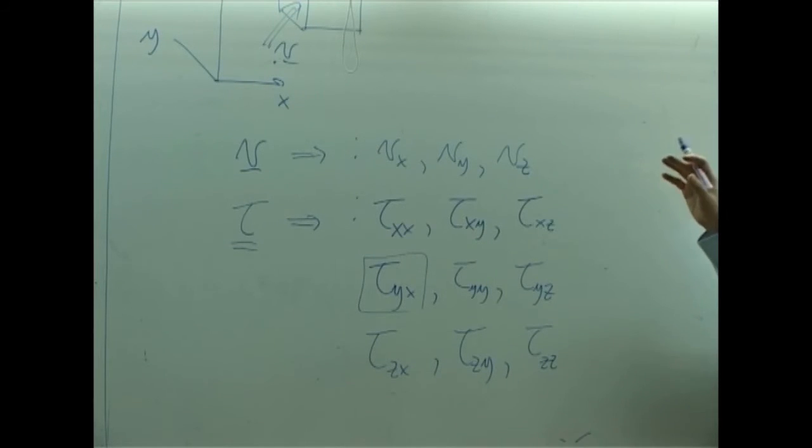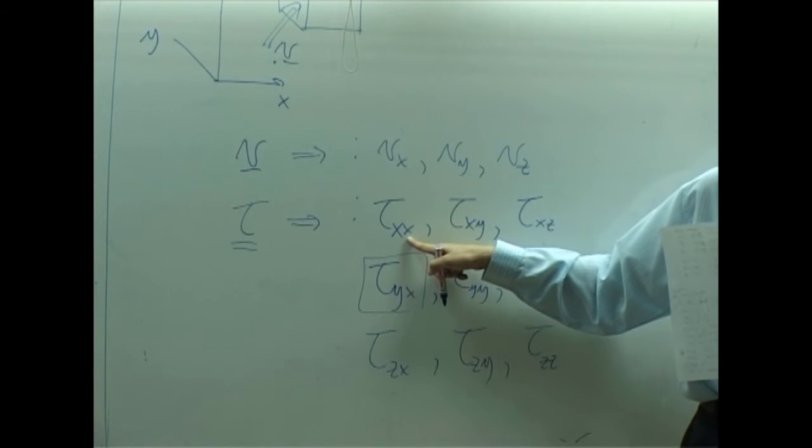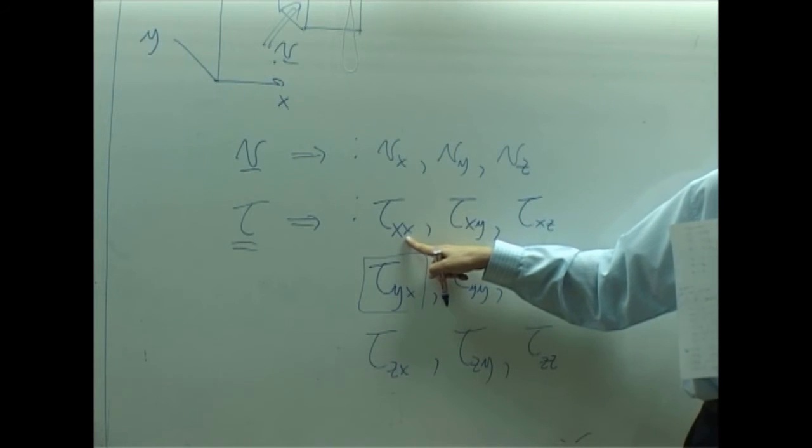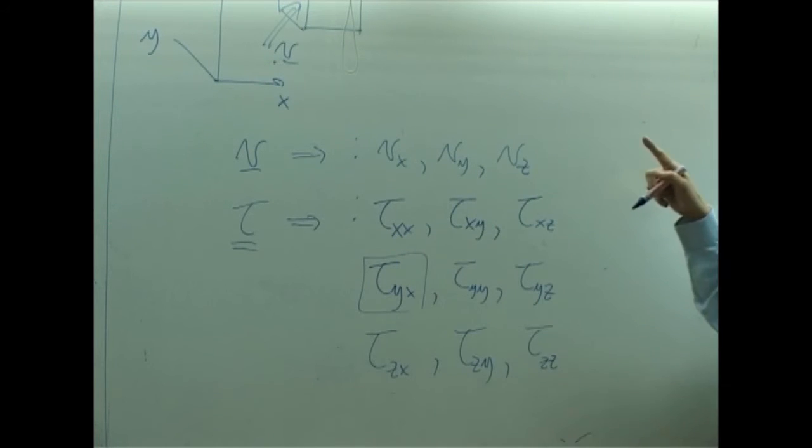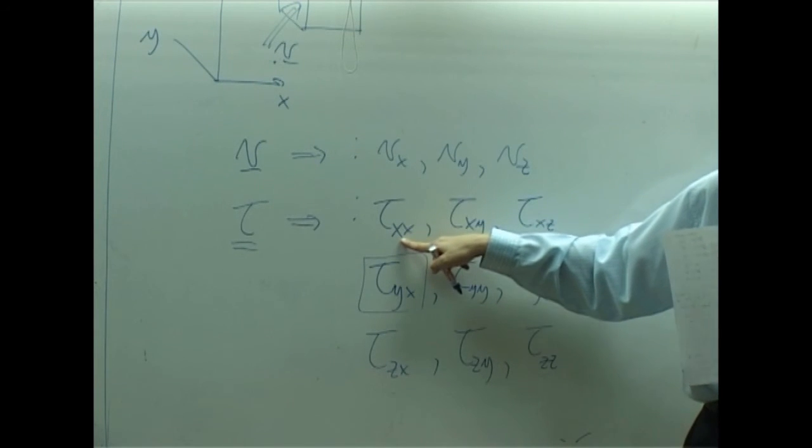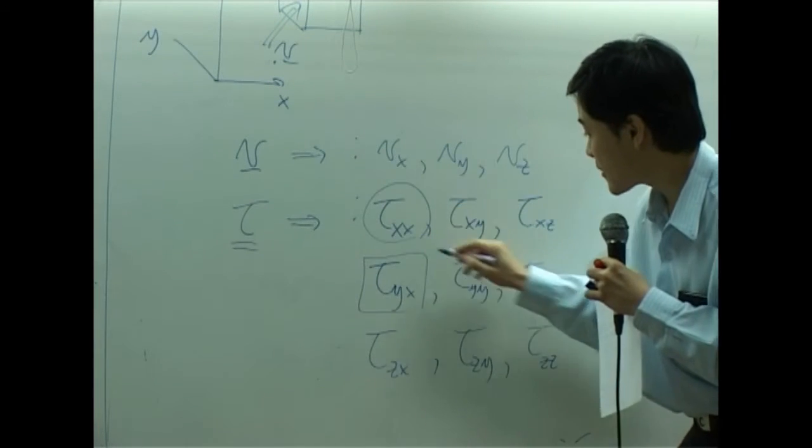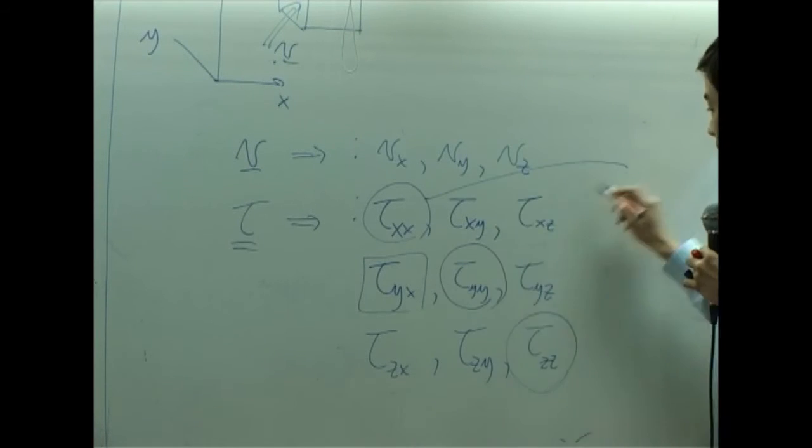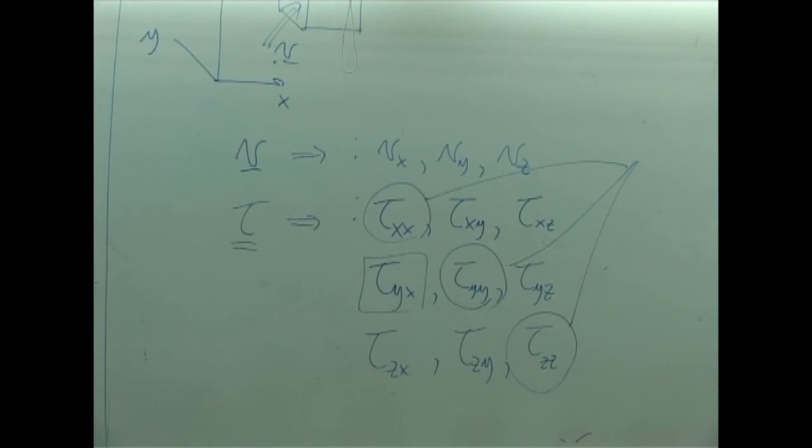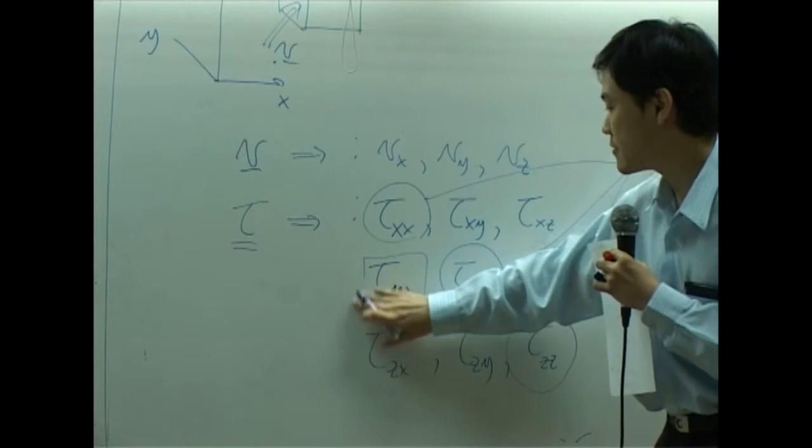Now, what about tau_xx? By the meaning, it's supposed to be x momentum transfer in x direction. If you notice, these are the same direction. So tau_xx, tau_yy, and tau_zz transfer in the same direction as the direction of the flow. These three are not shear stress because shear stress is supposed to apply parallel to the direction. This is called normal stress. The rest are shear stress.